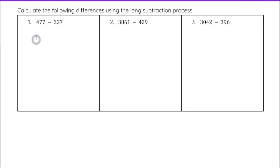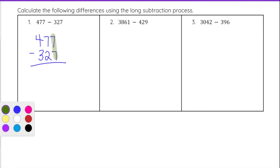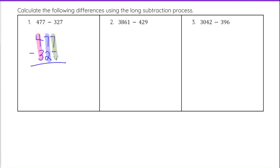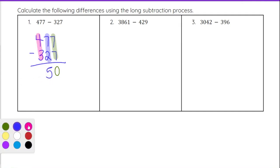So let's take a look at these examples. 477 minus 327. We write out 477 minus 327, and notice they each have three digits — we line up the last digit, the middle digit, and the first digit. We look down each column: ones, tens, and hundreds. Starting with the ones digit: 7 minus 7 is 0. Then the tens column: 7 minus 2 is 5. Then 4 minus 3 gives us 1. So our answer is 150.